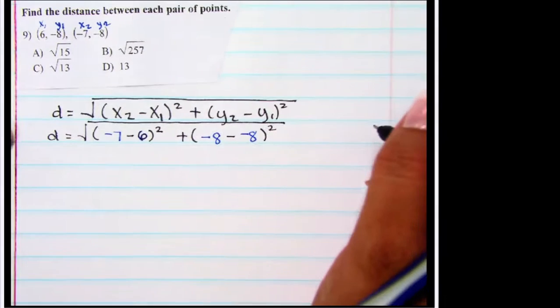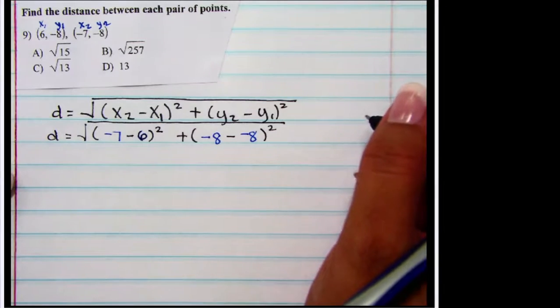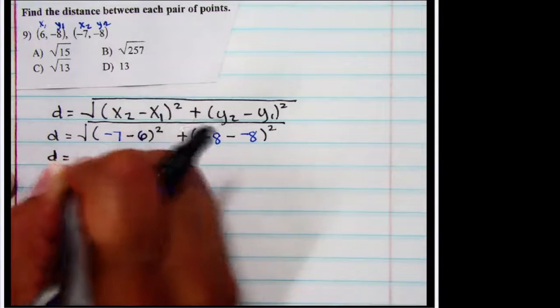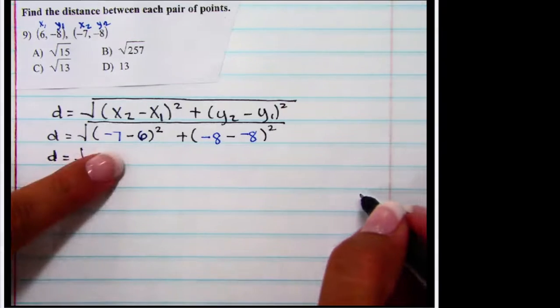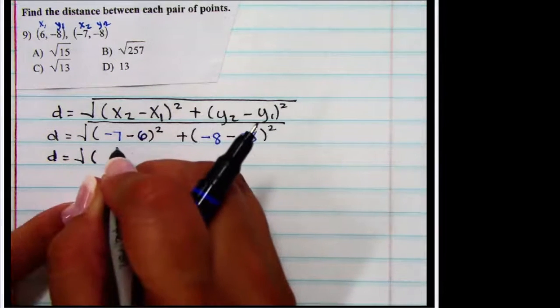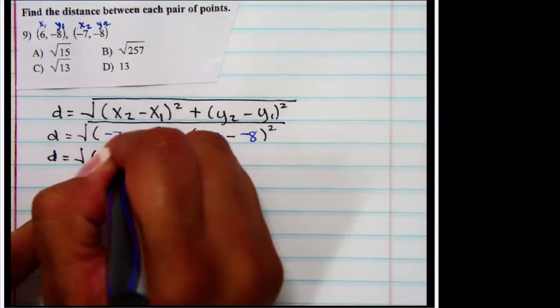Now that the substitution is done, I'm going to start using order of operations to evaluate this particular item. Order of operations says I have to do what's inside of parentheses and groups first. And so I'm going to look inside this parentheses and see that I have negative 7 minus 6. That is negative 13.